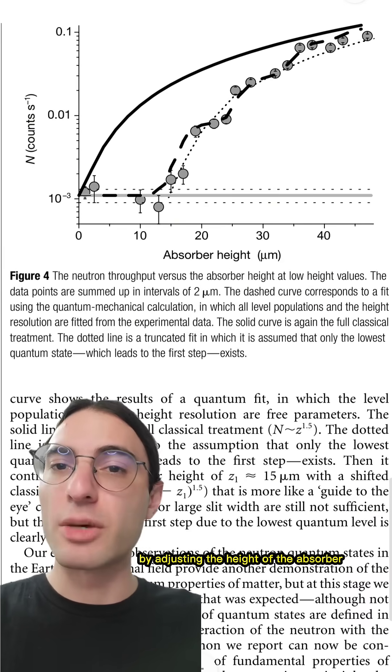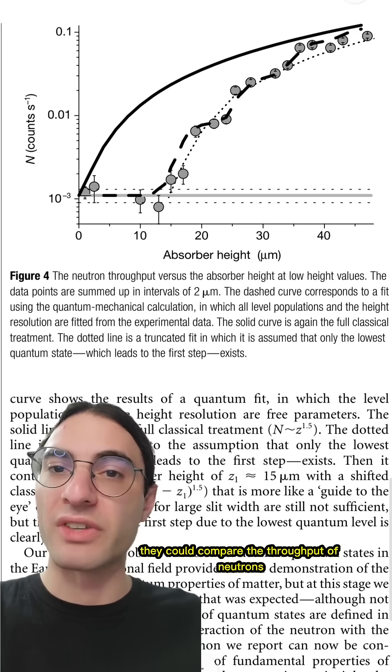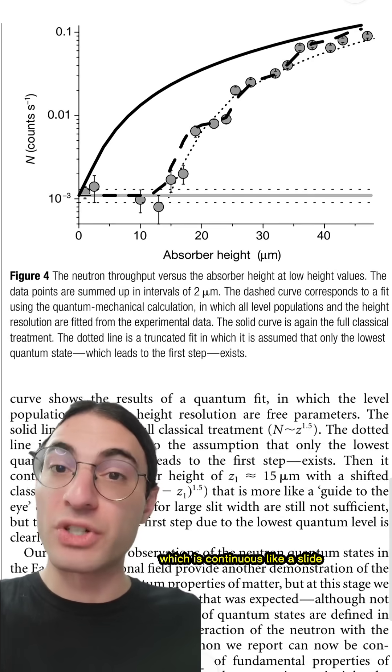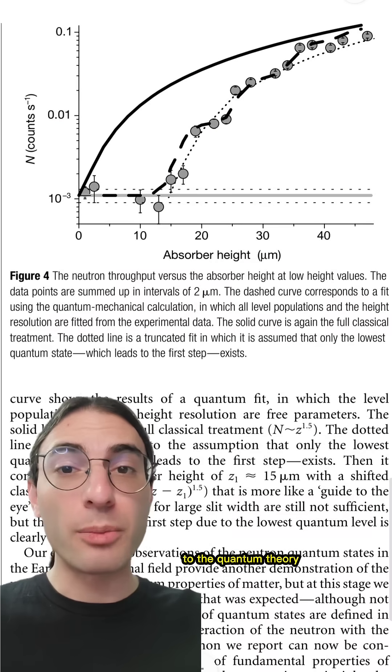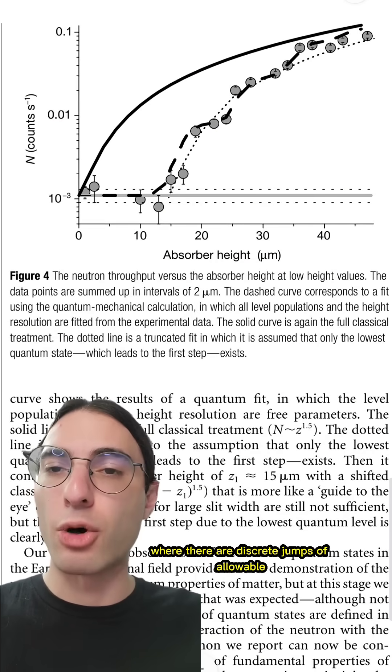By adjusting the height of the absorber, they could compare the throughput of neutrons as predicted by the classical theory, which is continuous like a slide, to the quantum theory, where there are discrete jumps of allowable energy levels.